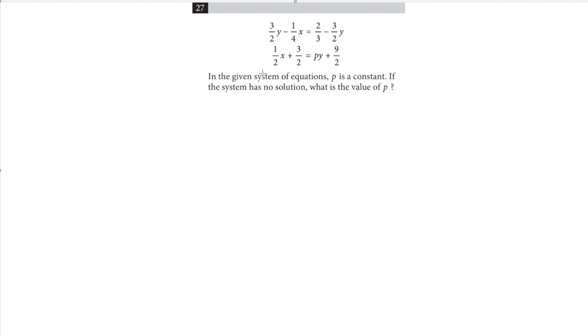All right, so here we have a system of equations from an actual SAT practice test given by the college board. We're trying to find a value of p, this constant in this equation, that gives the system no solutions.